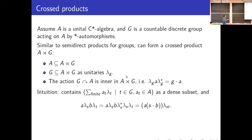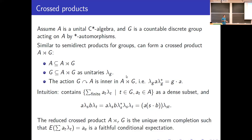These are the obvious elements you can form, and their multiplication is given as follows. For a lambda_S times b lambda_T, you multiply exactly how the product works for semi-direct products for groups. You can insert lambda_S star lambda_S in there because that's a unitary, and then lambda_S b lambda_S star becomes S acting on b. But we're analysts — we don't just like finite sums, we like infinite sums, and we like complete things.